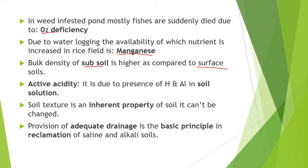Next point is, due to waterlogging, the availability of manganese is increased in rice fields. Bulk density of subsoil is higher compared to surface soil. Active acidity means the presence of H⁺ and aluminum in soil solution makes it actively acidic.